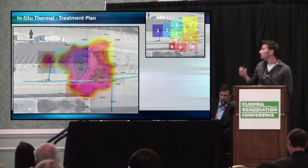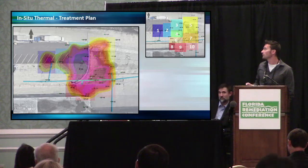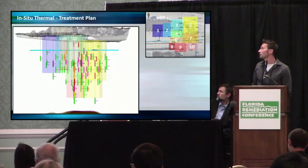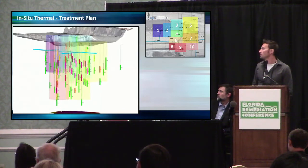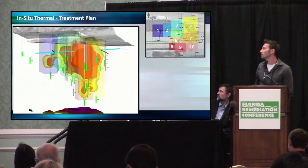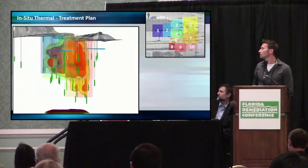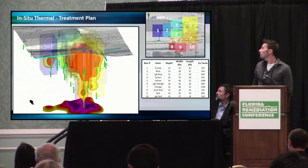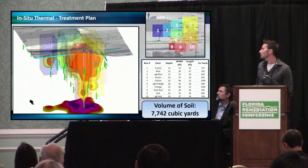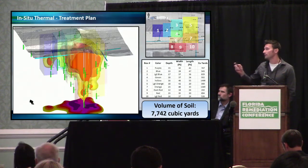The next option was in-situ thermal. We took all our data and defined 10 treatment cells to encompass the modeled extent of impacted soil, confirmed against clean samples. We could then calculate the cubic yards for each treatment cell — depth, width, and length — summing to about 7,700 cubic yards of soil to treat. This option is definitely on the table.